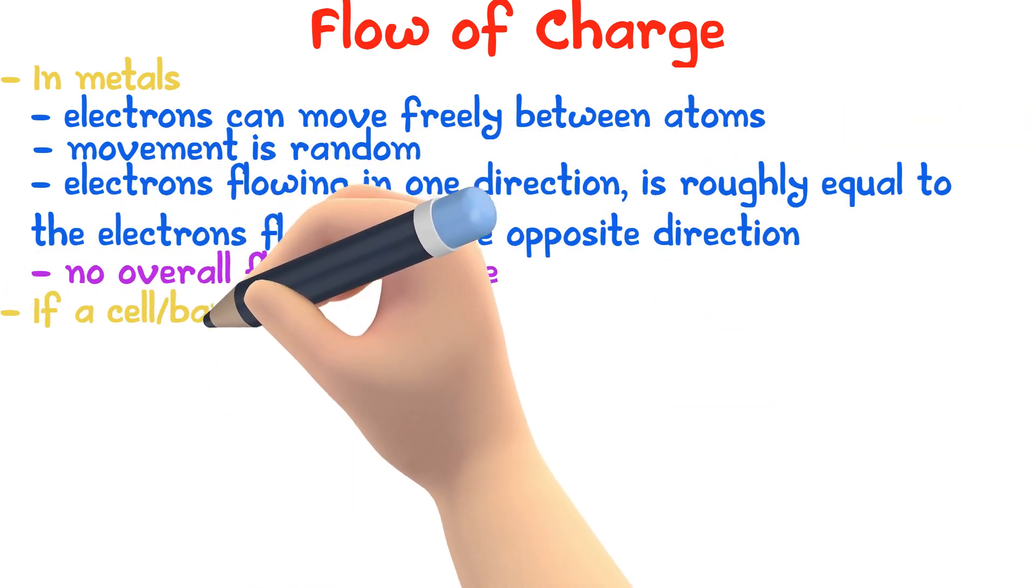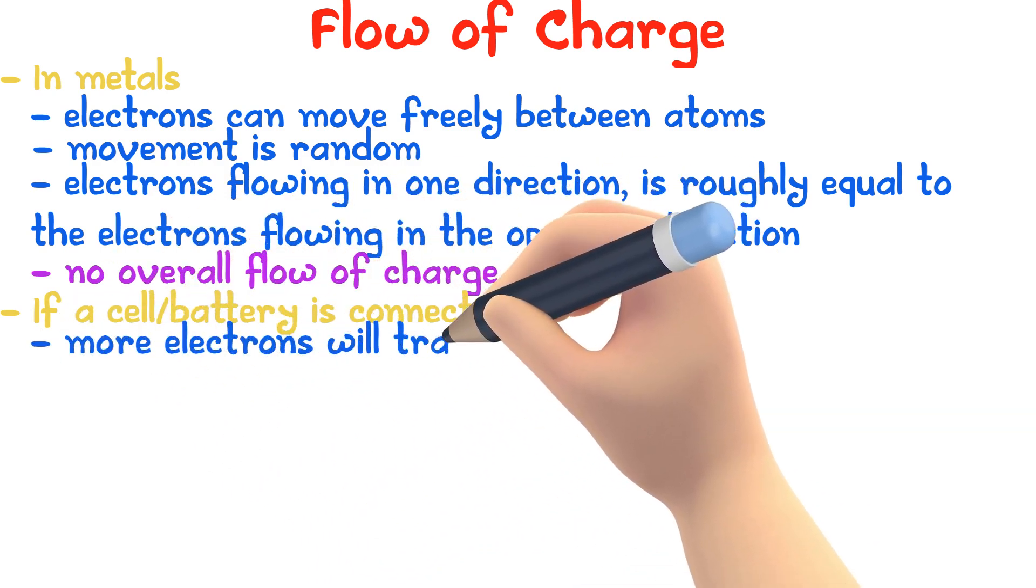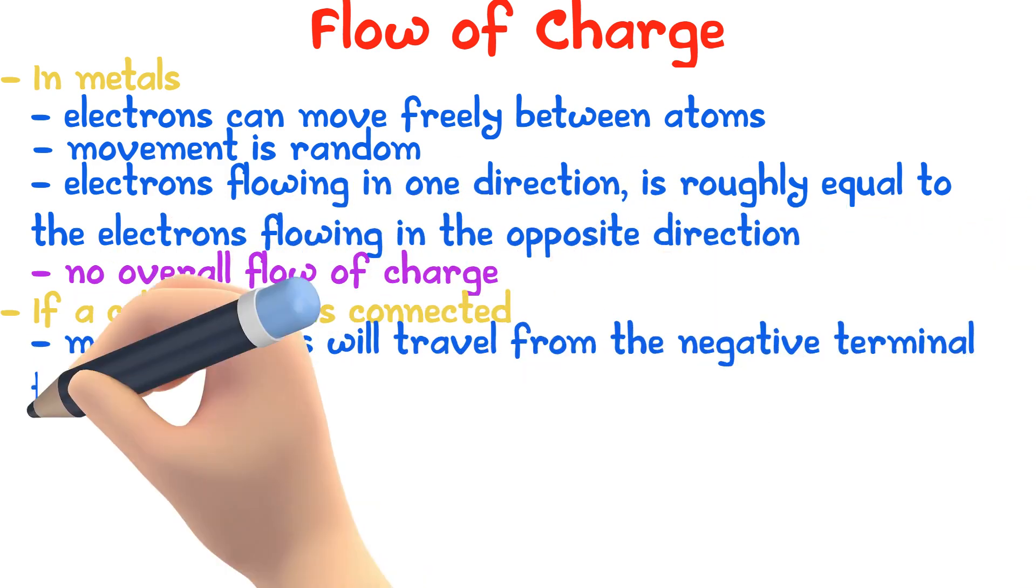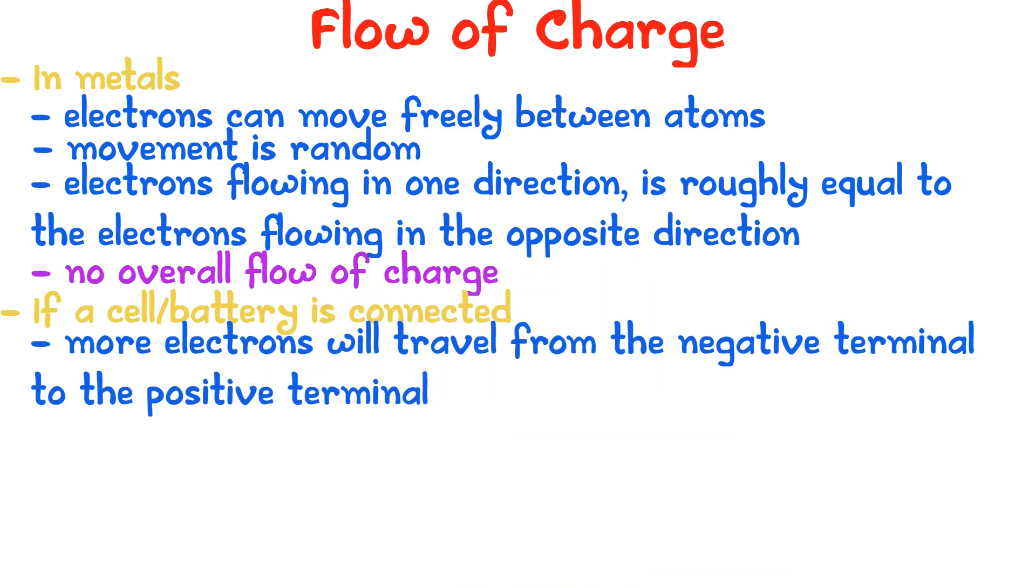If a cell or battery is connected, more electrons will flow away from the negative terminal towards the positive terminal. This is called the net flow of charge, which is electric current.